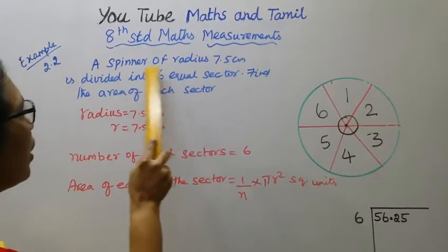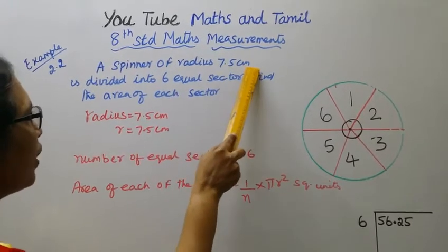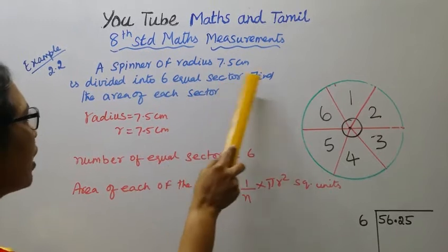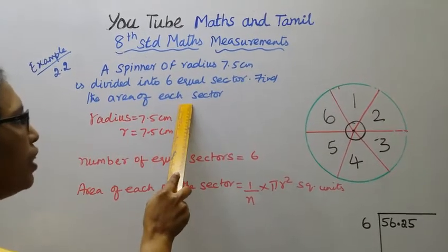A spinner of radius 7.5 cm is divided into 6 equal sectors. Find the area of each sector.